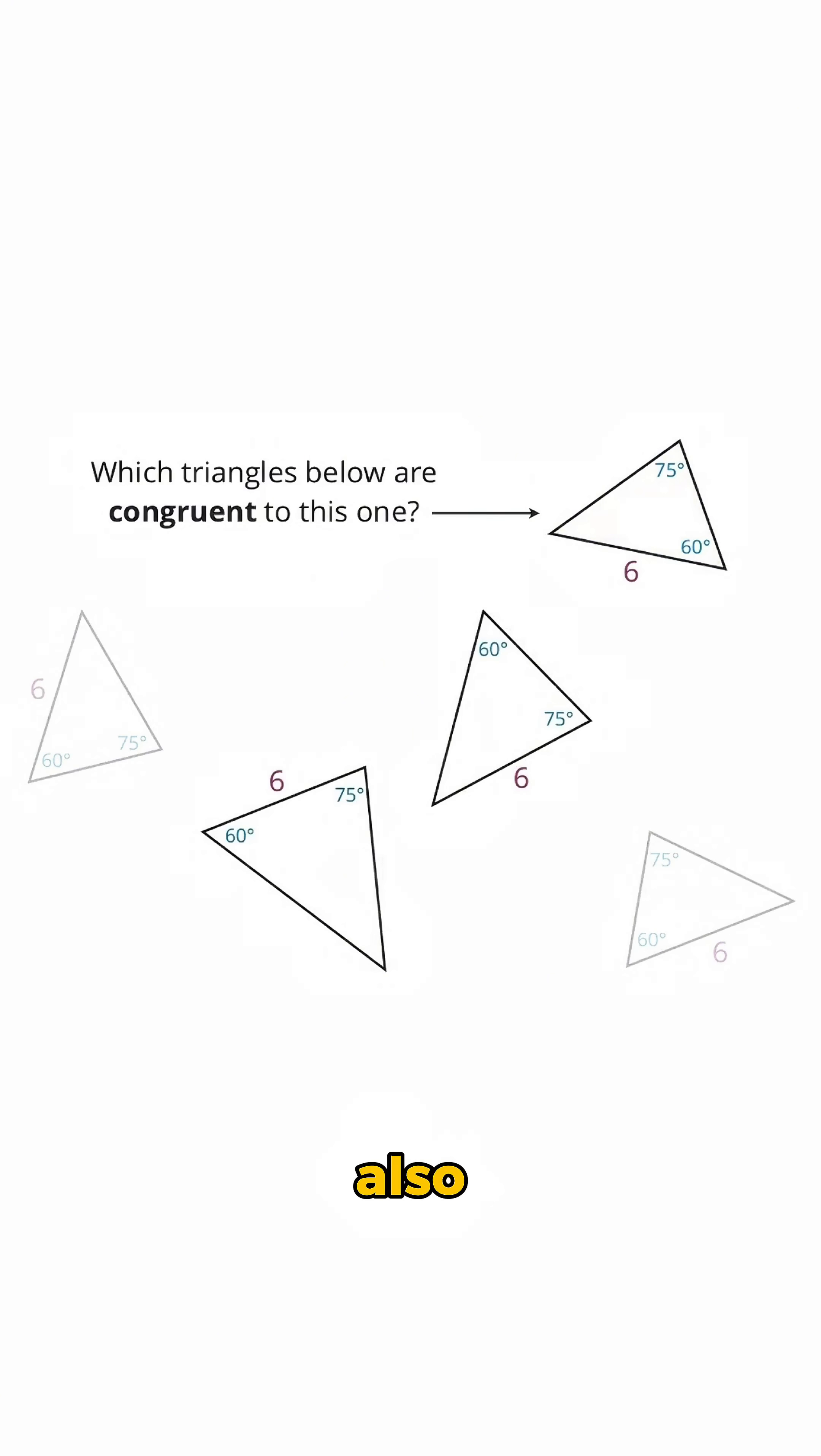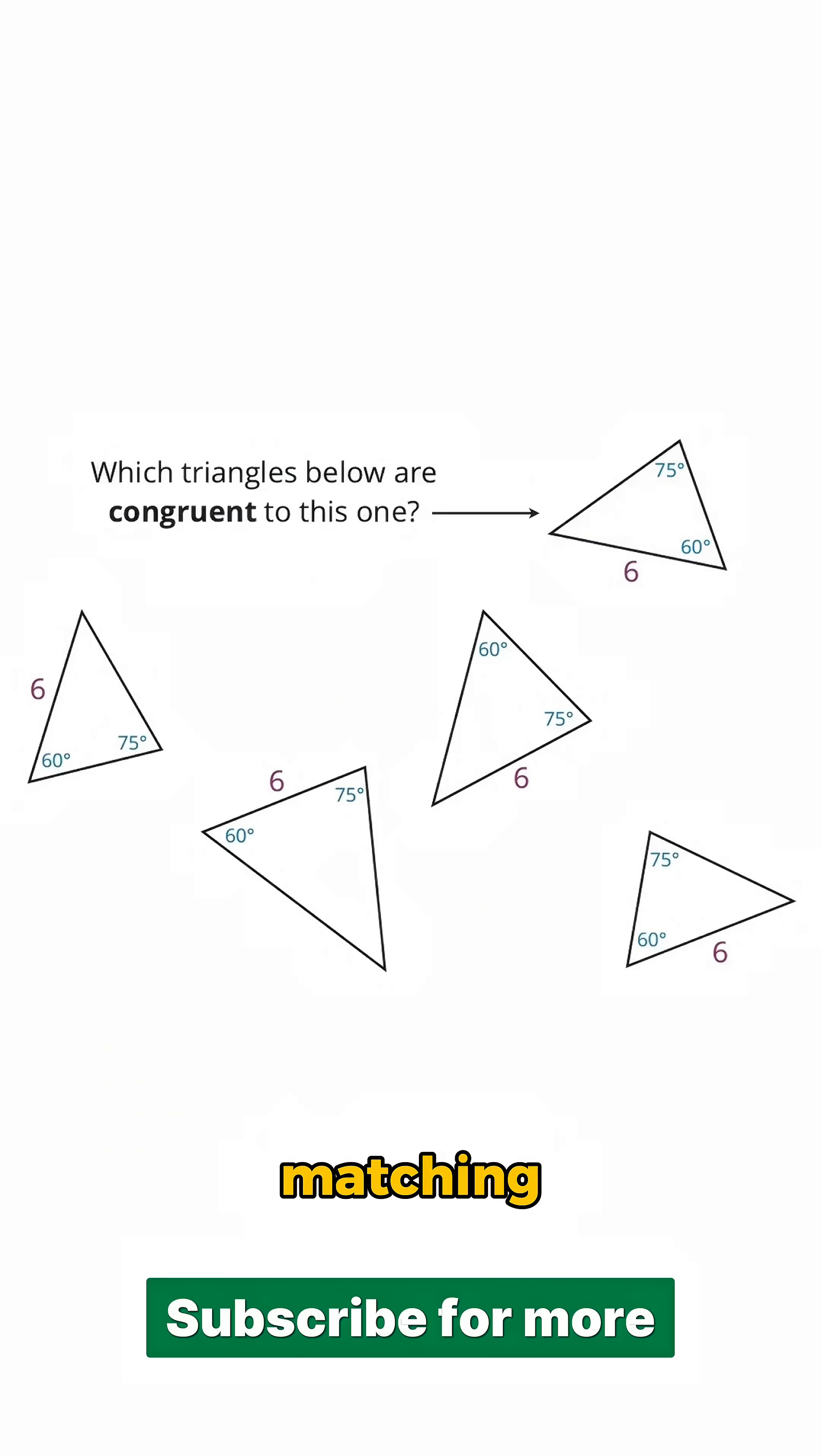These other two triangles also have a side of length 6 and angles of 60 and 75 degrees, but they're arranged in different ways. For this triangle, the angles surround the side, so you can see it's not congruent. And for this triangle, it's the 60 degree angle rather than the 75 degree angle that's opposite from the side of length 6. So when you're comparing triangles, pay close attention to those matching sides and angles.